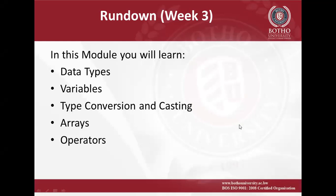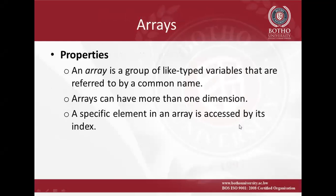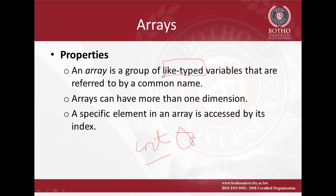An array is a group of like-typed variables that are referred to by a common name. When we say like-typed, we mean that all the values stored in an array must be of a given type. For example, when you create an array and specify that it is of int type, all the values stored in that array must be integers. All elements are referred to by a common name, and each element is accessed using an index.